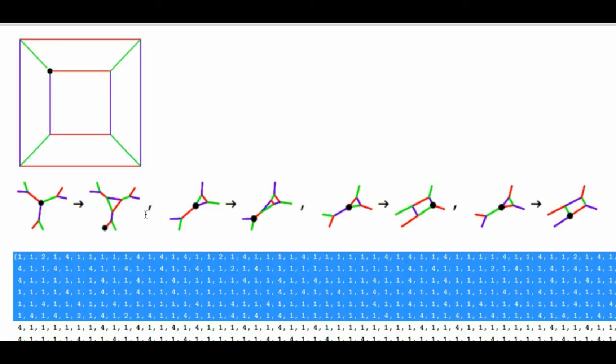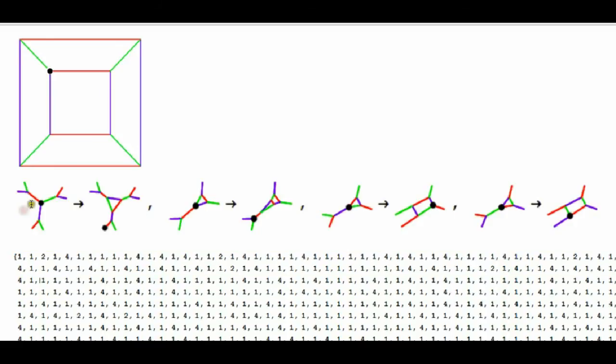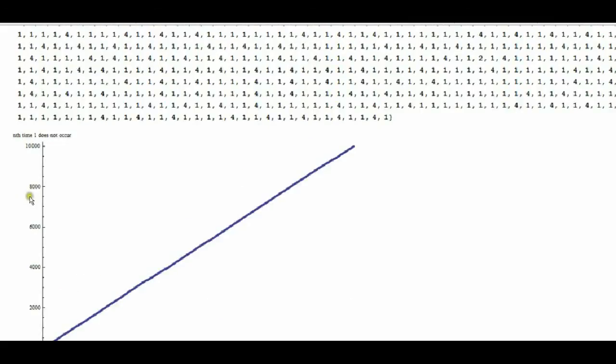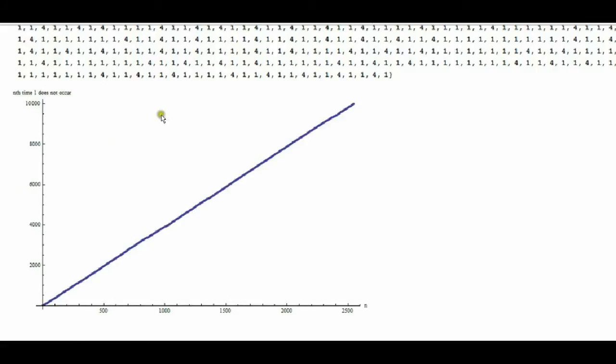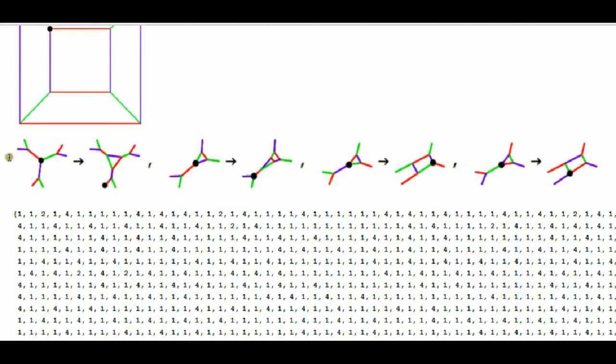So what we'll do is we'll make a plot of what time steps these operations other than one are applied. So for example, when n is one, the first time that an operation other than one gets applied is three. When n is two, the second time an operation other than one is applied is five, and so on.